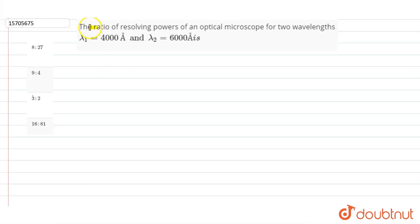So this question has asked that the ratio of resolving powers of an optical microscope for two wavelengths, lambda 1 that is 4000 angstrom and lambda 2 that is 6000 angstrom is.